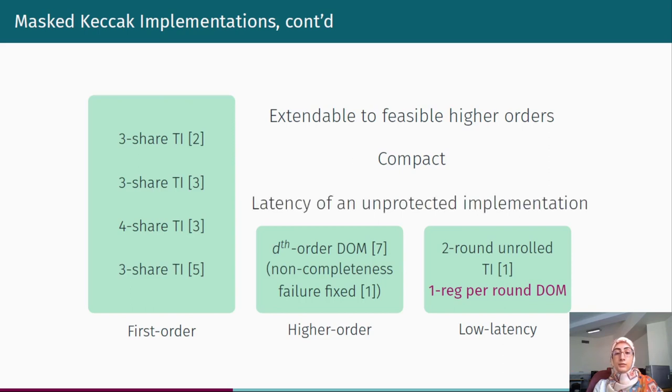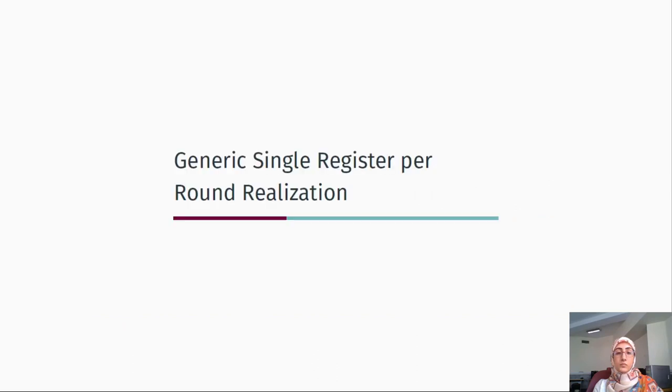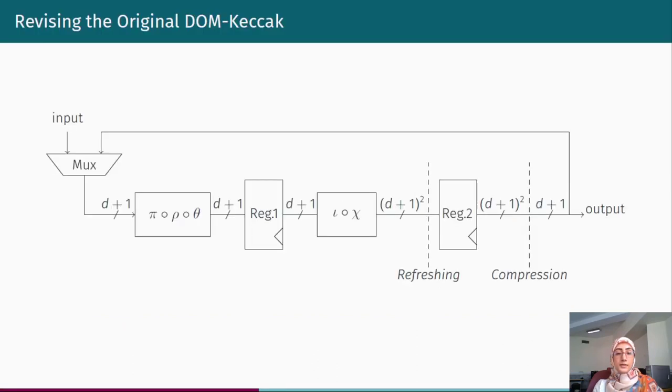Our design stays with the latency of an unprotected implementation at any arbitrary order. To this end, we revise the round function of the DOM implementation of Keccak. We relocate the compression layer in such a way that the round function needs only one register stage per round. In fact, we move the compression layer after the linear layer theta.